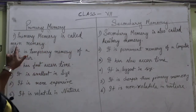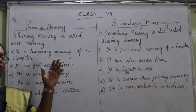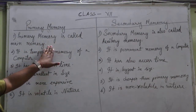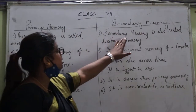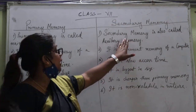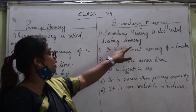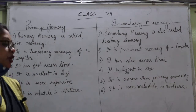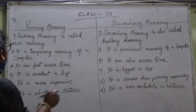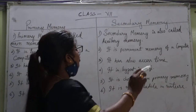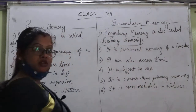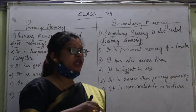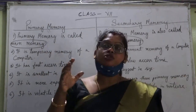Number one point: primary memory is called main memory. Primary memory ka doosra naam main memory hota hai. Whereas secondary memory is called auxiliary memory. So the second name of primary memory is main memory, and the second name of secondary memory is auxiliary memory.